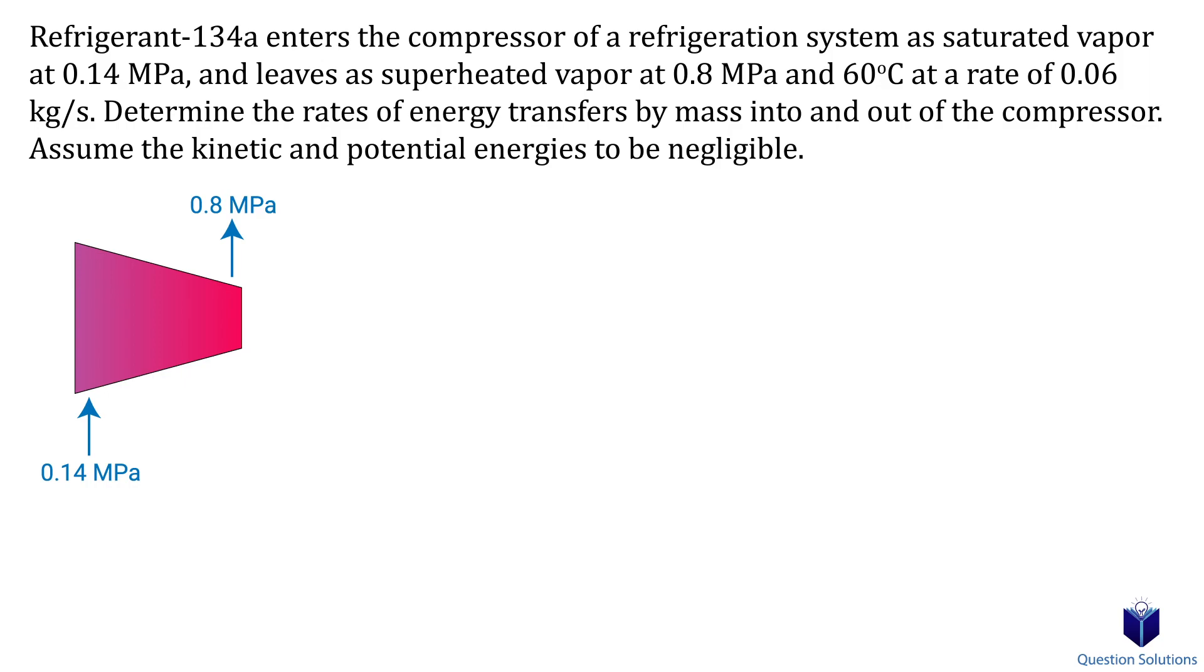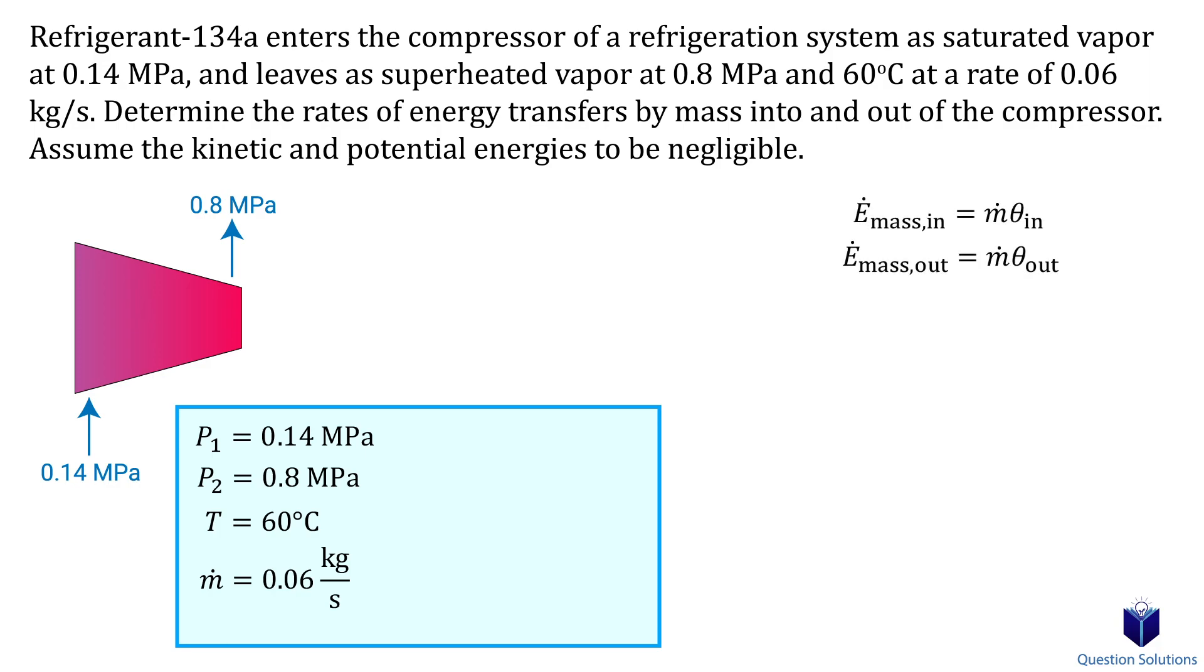Let's take a look at this problem where we have refrigerant-134a entering a compressor. We need to figure out the rates of energy transfer for mass in and out. The refrigerant enters at a pressure of 0.14 MPa, leaves at 0.8 MPa, the temperature as it leaves is 60°C, and the mass flow rate is 0.06 kg/s. We can find the rates of energy transfer using this equation. Since potential energy and kinetic energy are negligible, we just need to consider enthalpy.